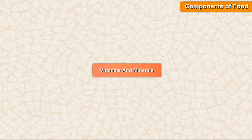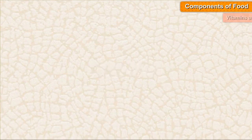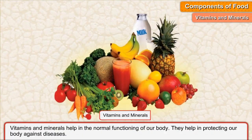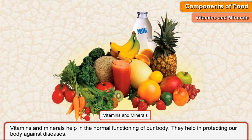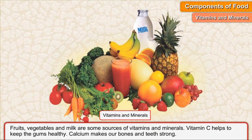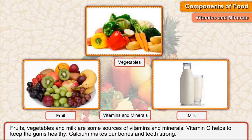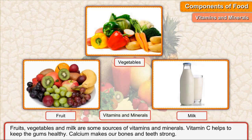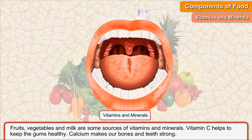The fourth and fifth components are vitamins and minerals. Vitamins and minerals help to maintain the normal functioning of our body and protect it against diseases. Some sources of vitamins and minerals are fruits, vegetables, and milk. Vitamin C helps to keep the gums healthy, and calcium makes our bones and teeth strong.